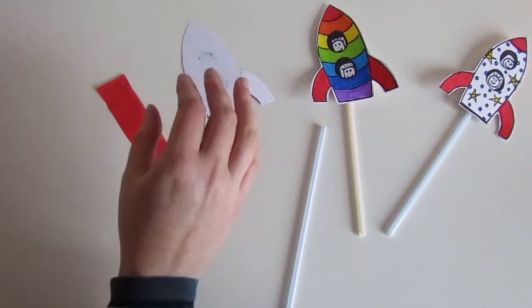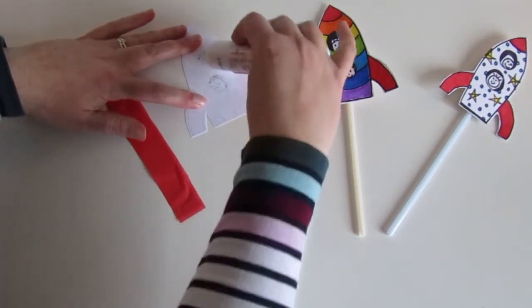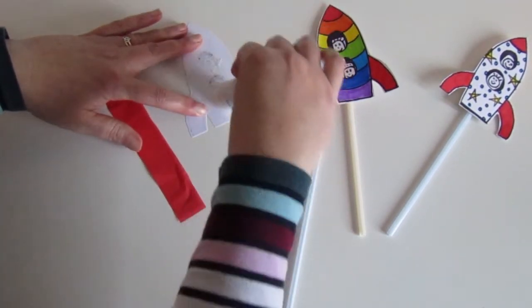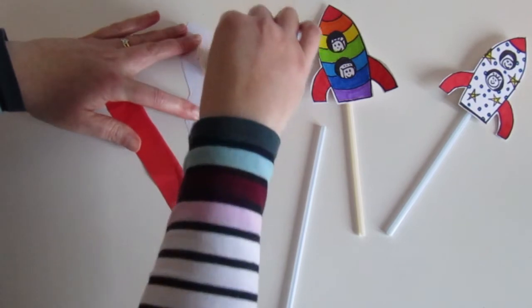flip this over and we're going to put some glue on the back. Just a kind of rectangle of glue in the middle.